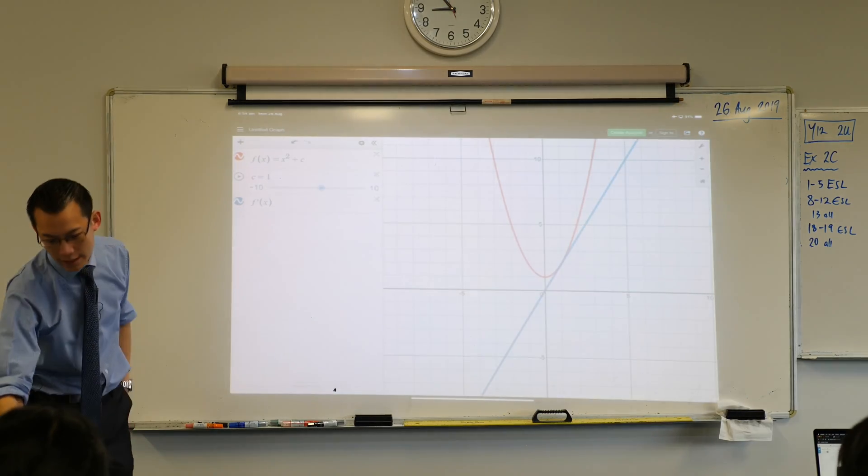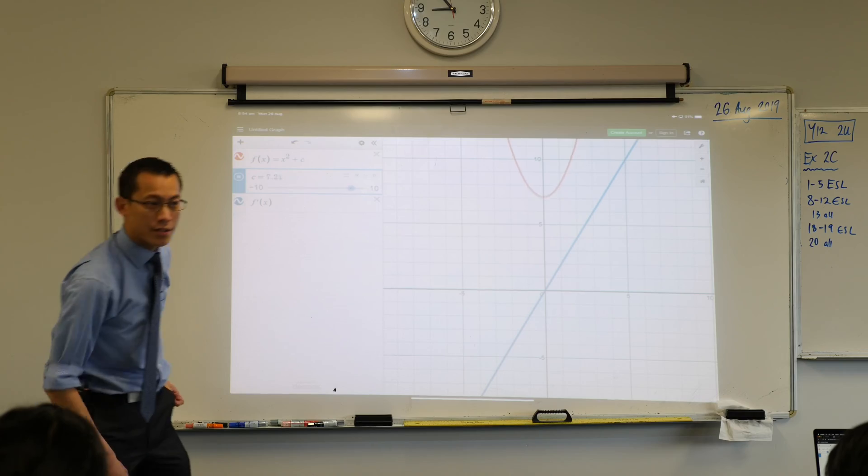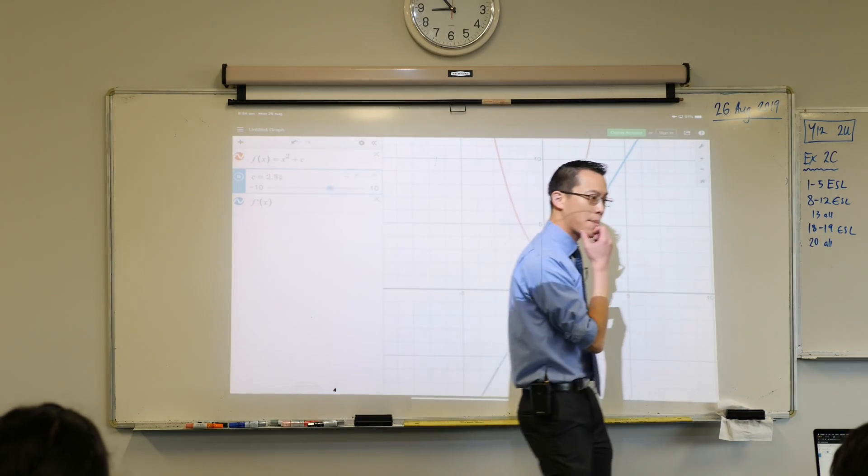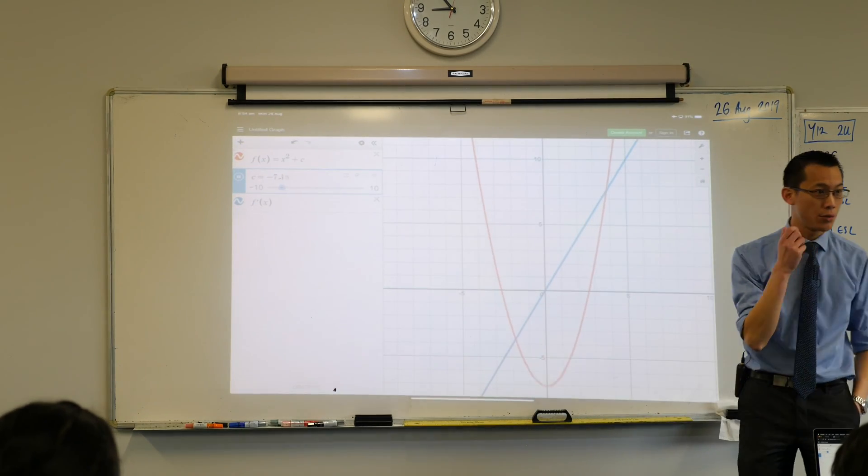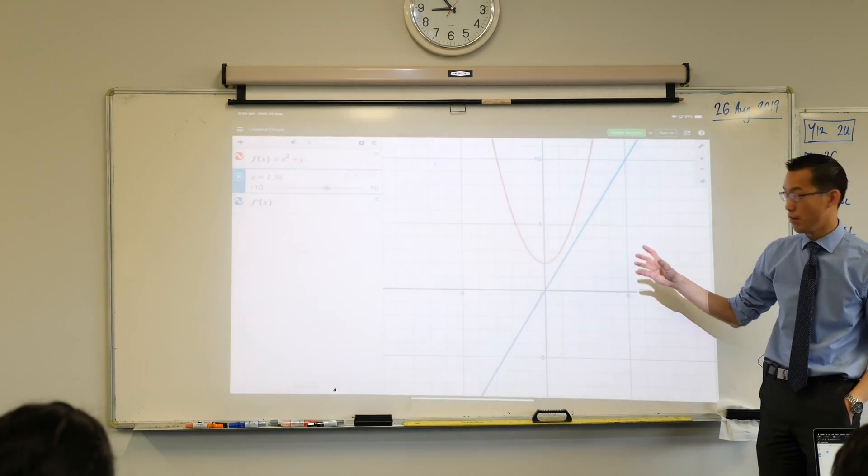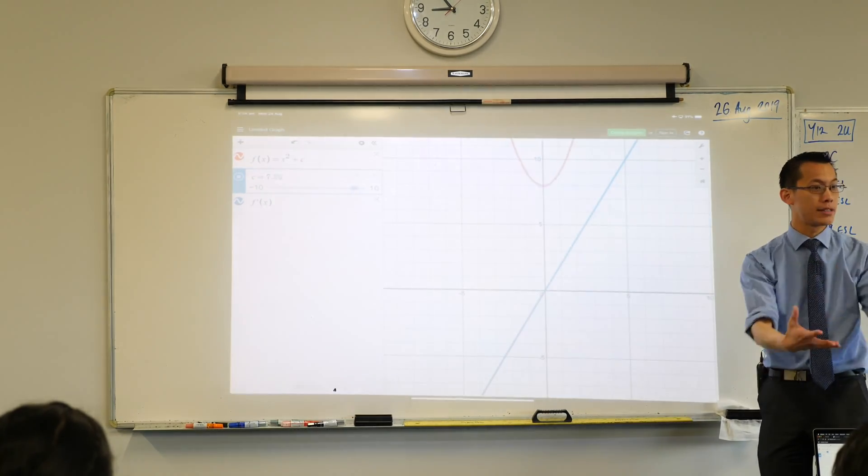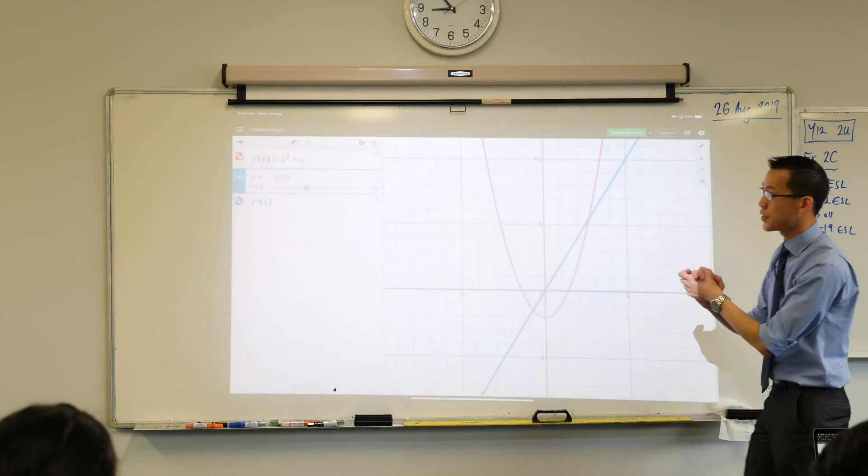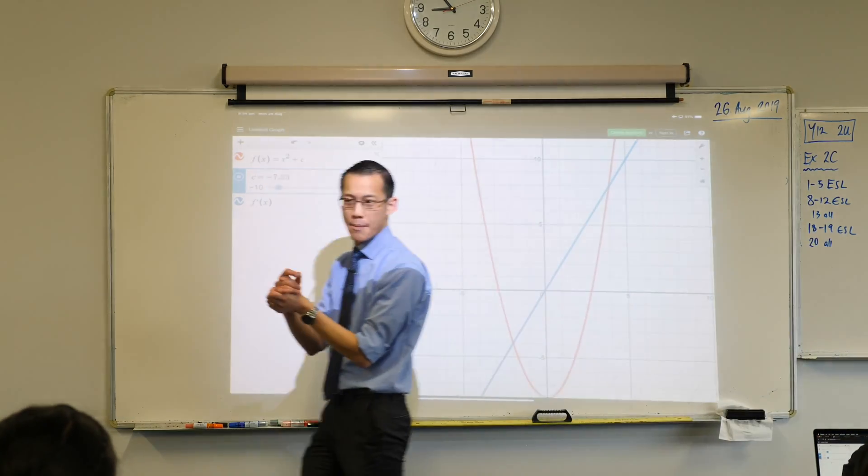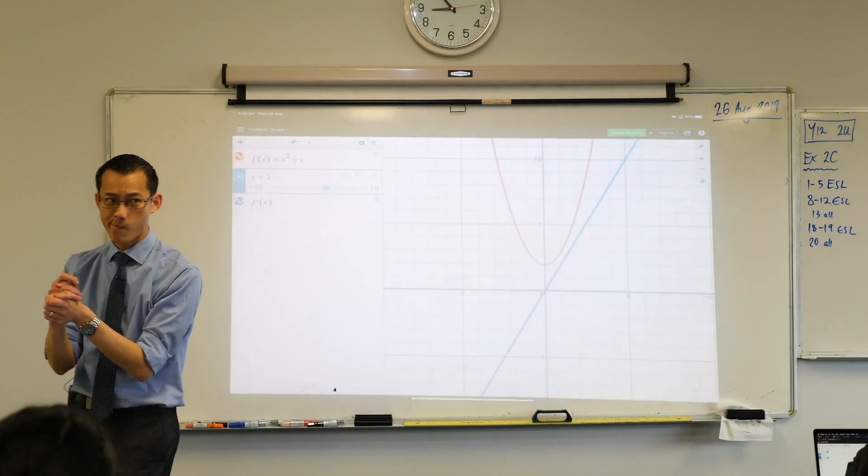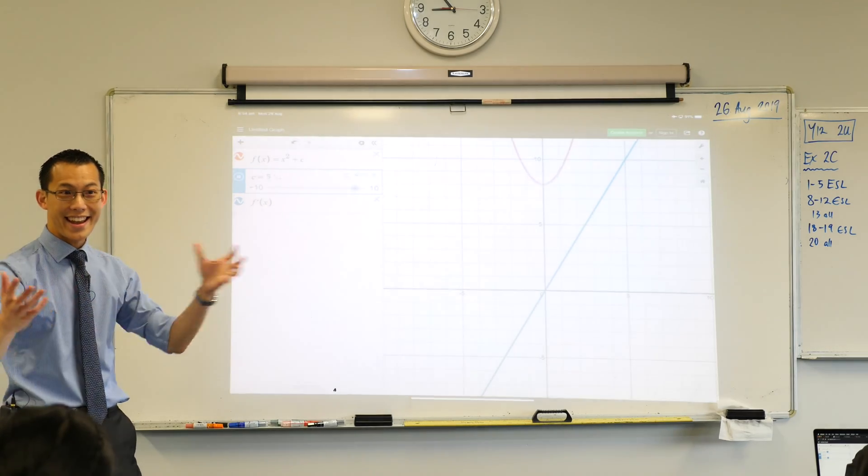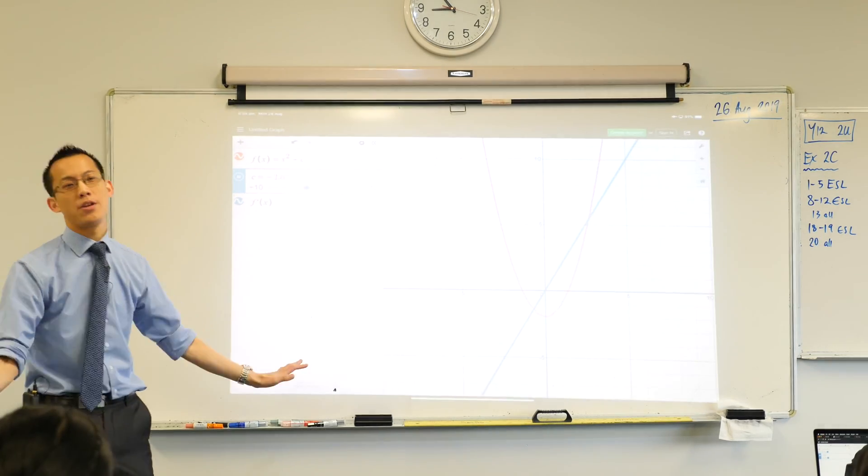And if you want, you can be very lazy and you can just hit play. Now you can see what effect does that have on our parabola? The parabola is going up and down, we would call this translation, there's a shift, a vertical shift. But importantly I want to ask, what's happening to the derivative? It remains stagnant, it's not going anywhere.